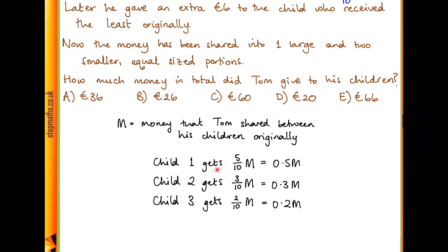Child number 1 would get 5 tenths of the total amount M, or 0.5M. Child 2 would get 3 tenths M and child 3 would get 2 tenths M. So this is how much each child got originally.